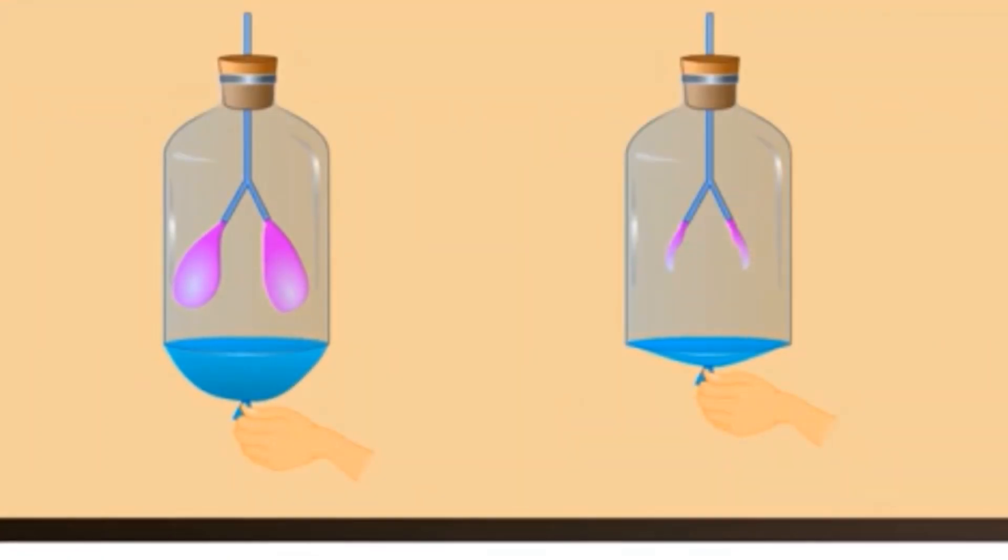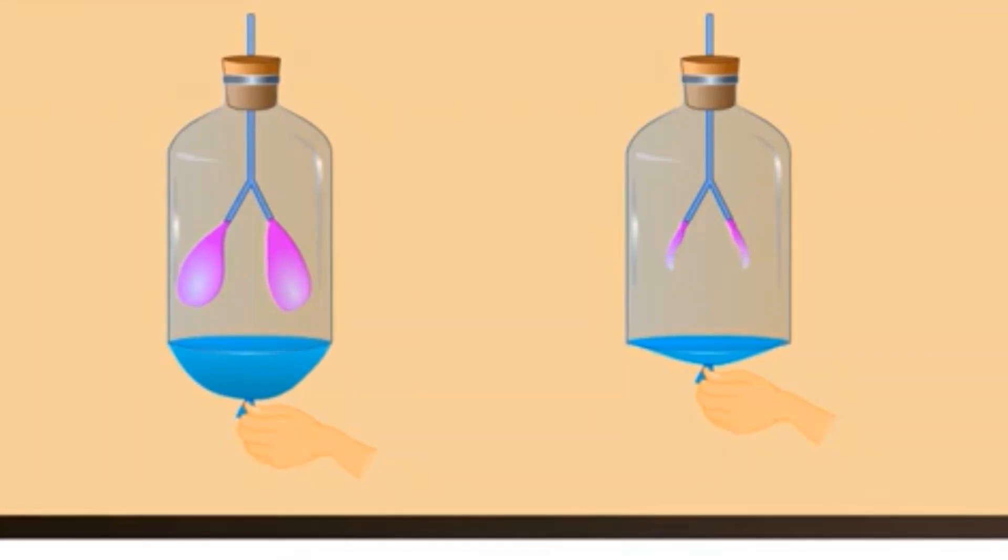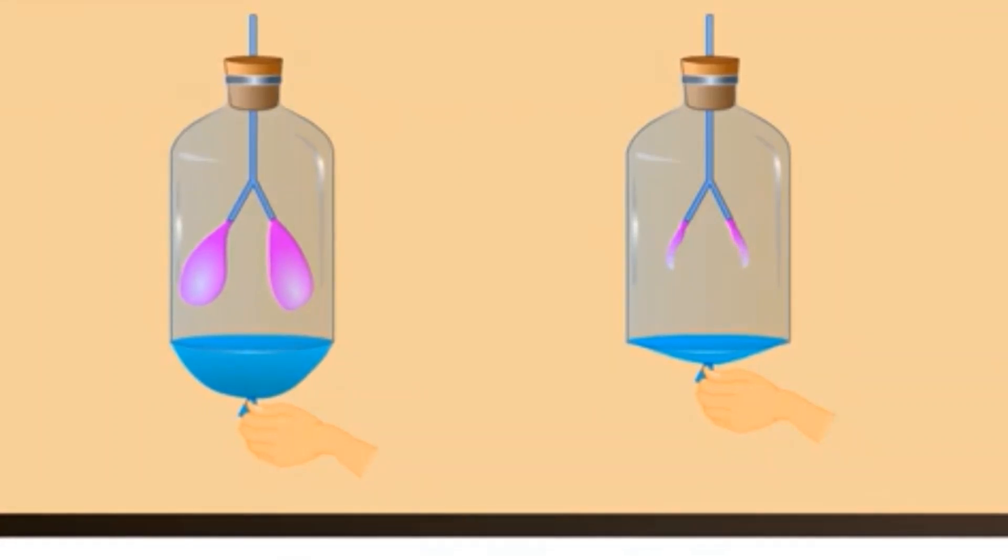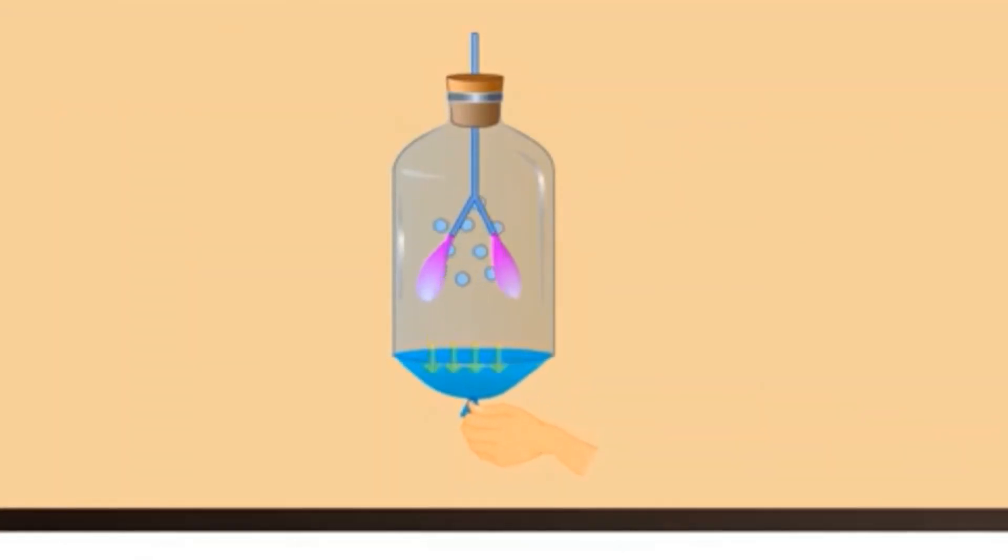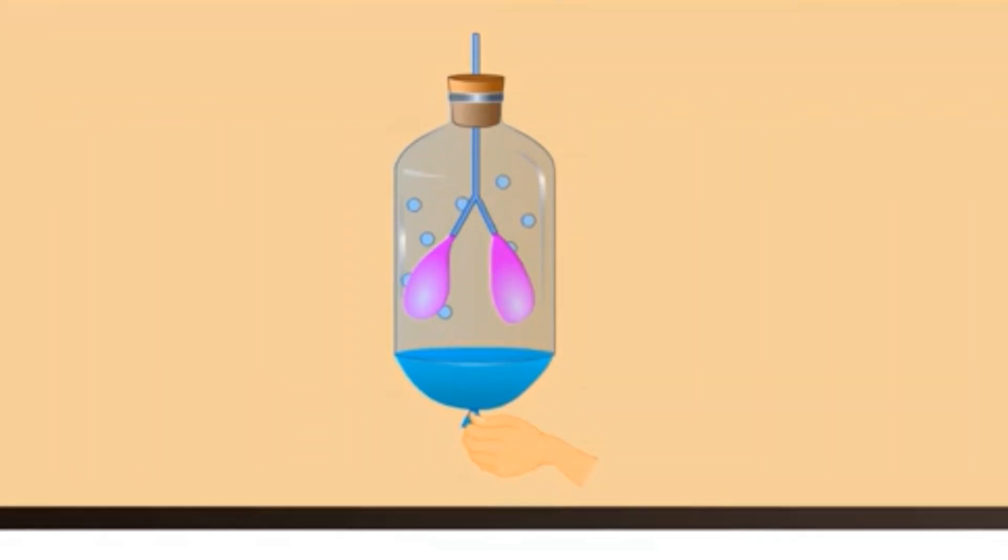How do the balloons get inflated and deflated when we pull or push the rubber sheet? When we pull the rubber sheet outwards, the space inside the bottle increases and the air inside the bottle becomes lighter.